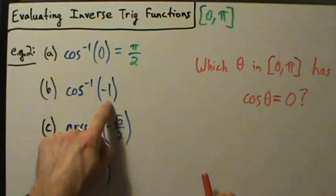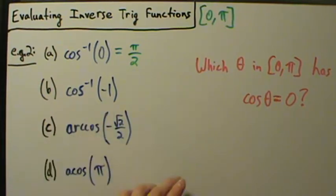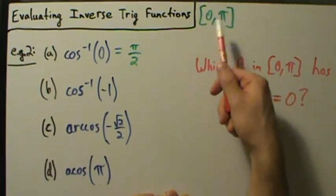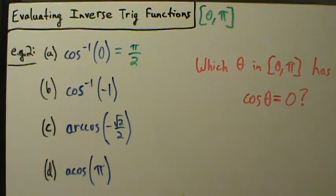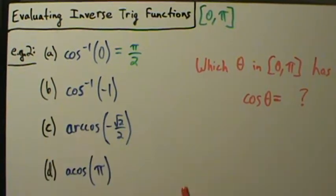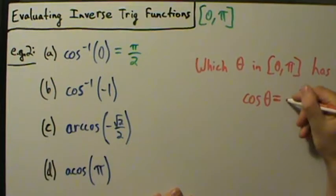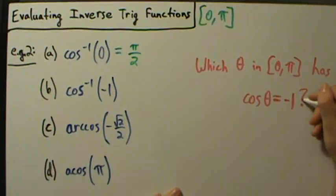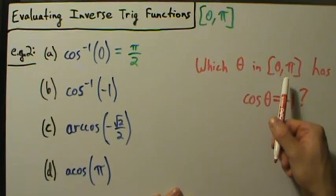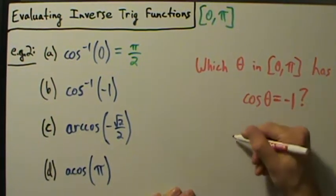Now the inverse cosine of negative 1. We ask ourselves the exact same question: which theta in the interval from 0 to pi — the range of the inverse cosine — has cosine of theta equal to negative 1? Looking at the unit circle, the only number in this interval that has cosine equal to negative 1 is pi.